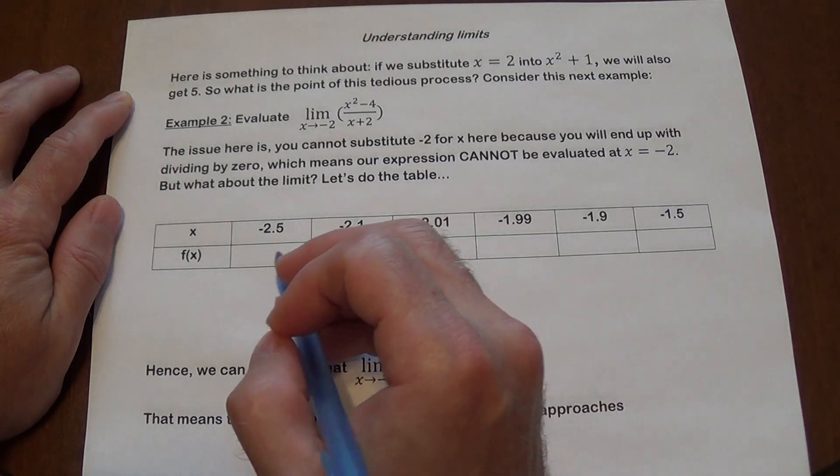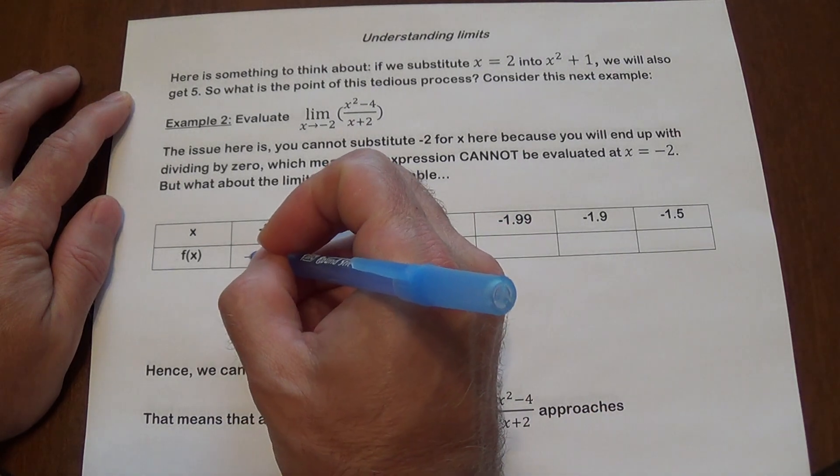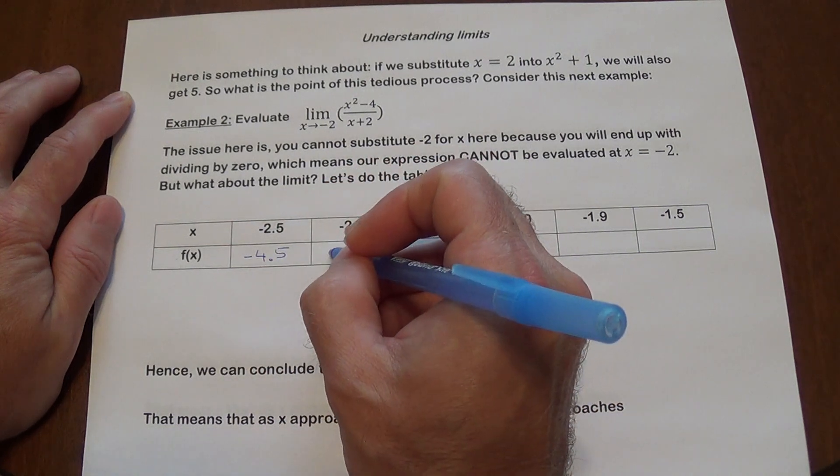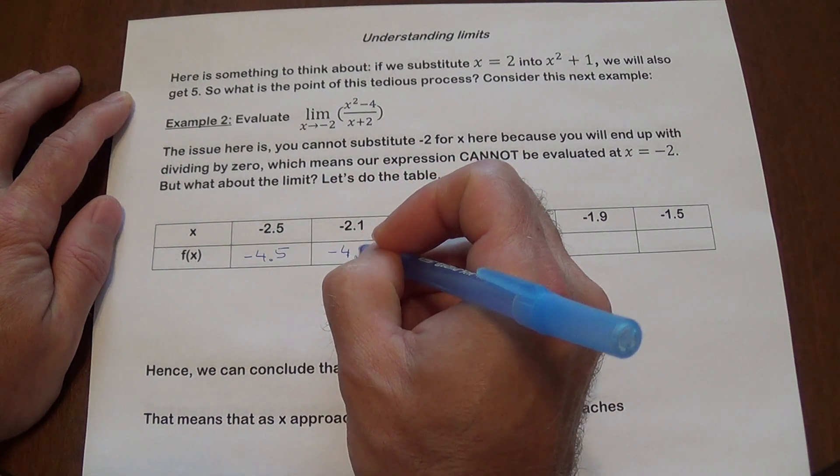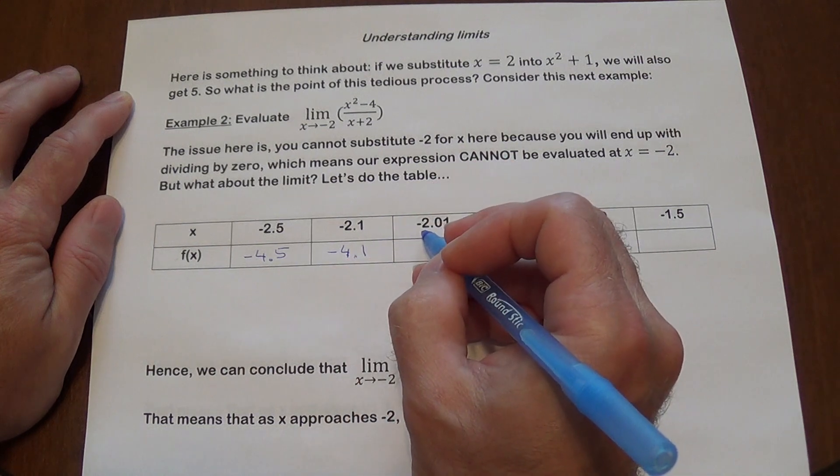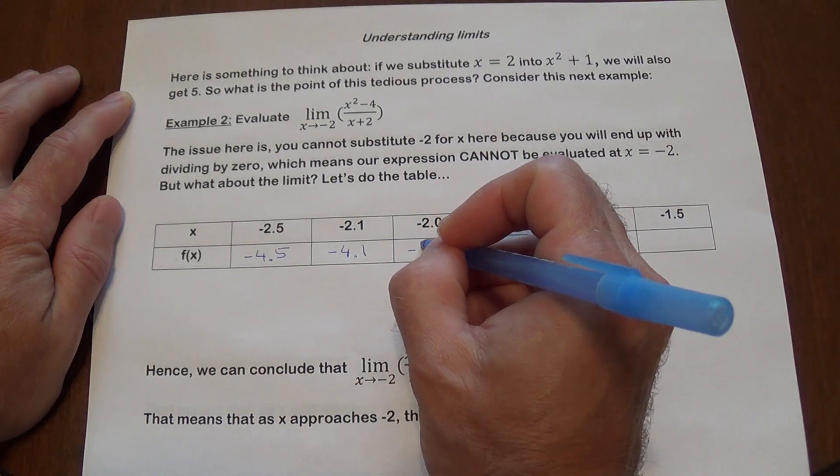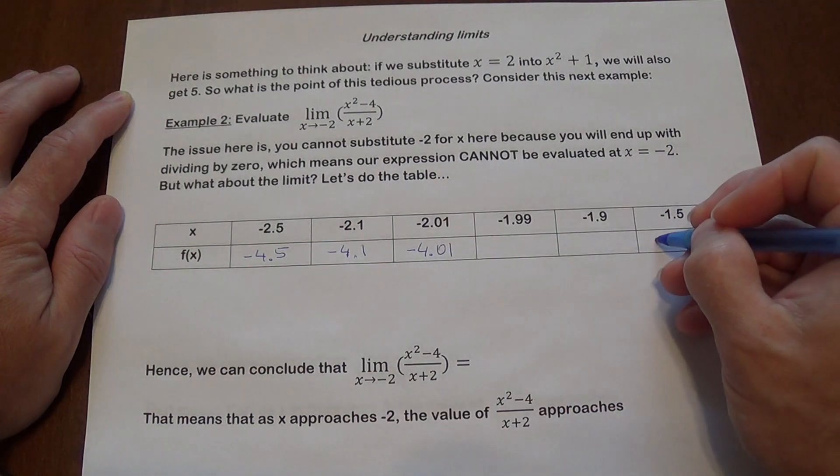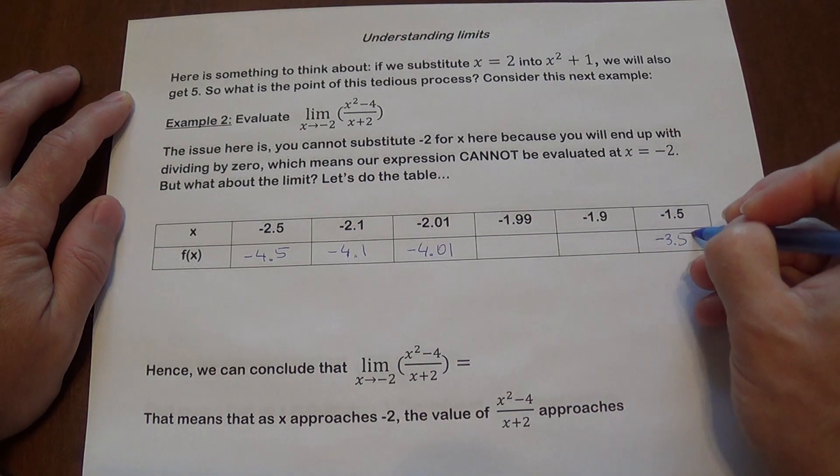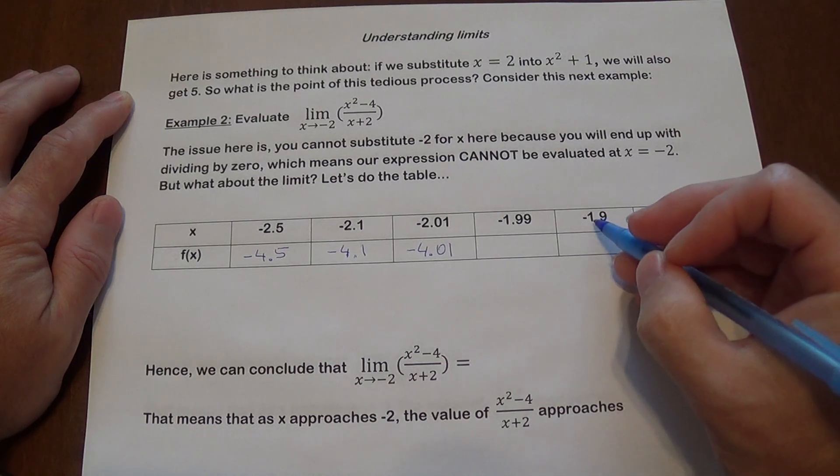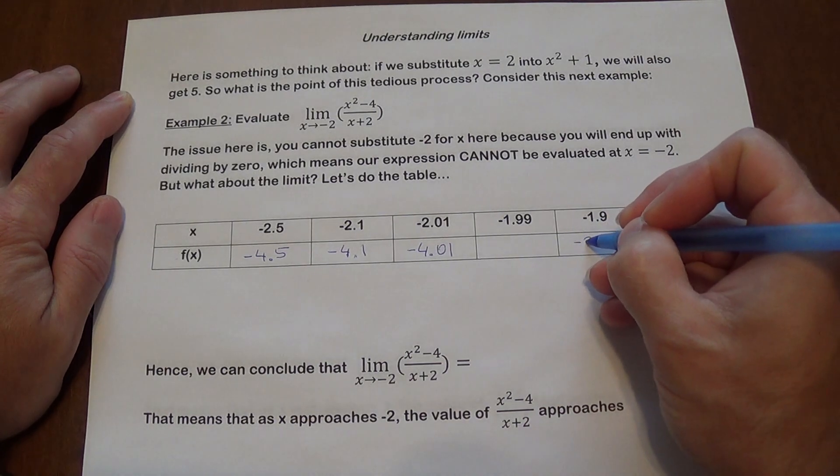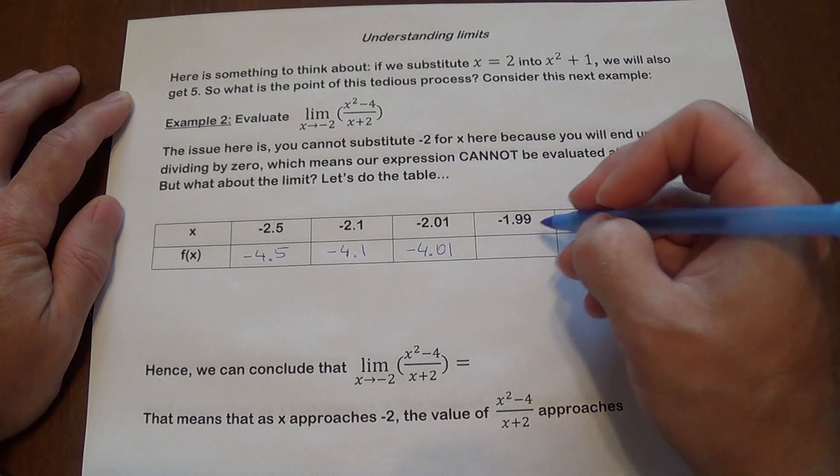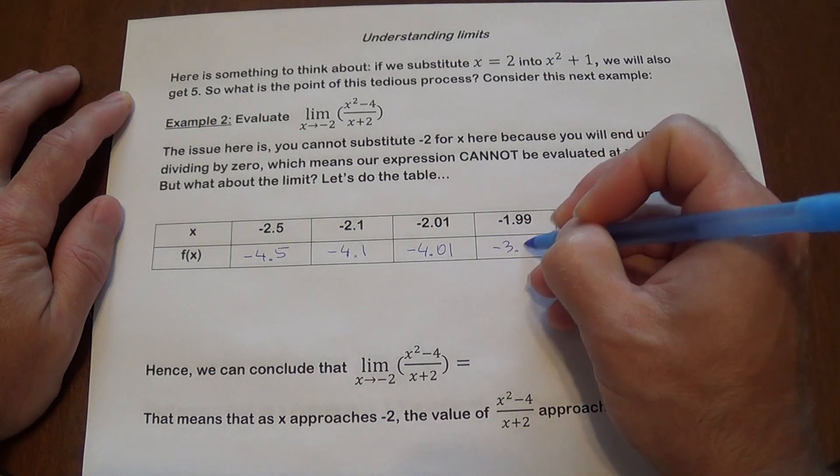So for here, I'm going to get negative 4.5. For negative 2.1, I'm going to get negative 4.1. For negative 2.01, I'm going to get negative 4.01. From the other side, this is going to give me negative 3.5. For negative 1.9, I'm going to get negative 3.9. And for negative 1.99, I'm going to get negative 3.99.